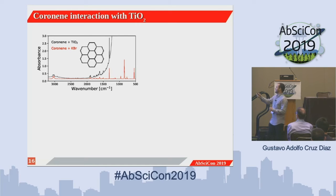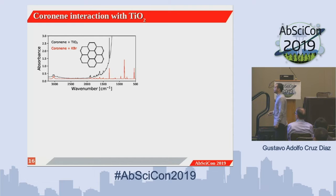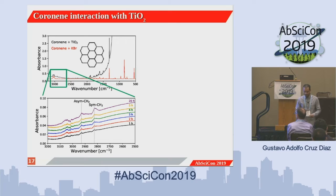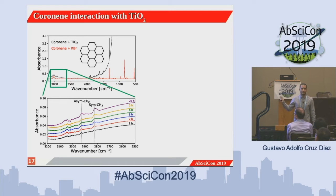Here is the spectrum of coronene with KBr, which is an infrared transparent compound, so you can see a nice spectrum of coronene. When you mix it with titanium dioxide, you see the huge absorption from the titanium dioxide. We let our sample rest for one day inside the chamber. Looking at the difference spectrum — where each successive hour is subtracted from the deposition spectrum — we see some bands growing. These bands are aliphatic: the asymmetric CH₂ and symmetric CH₂ stretching modes. So what is going on is hydrogenation of the PAHs.